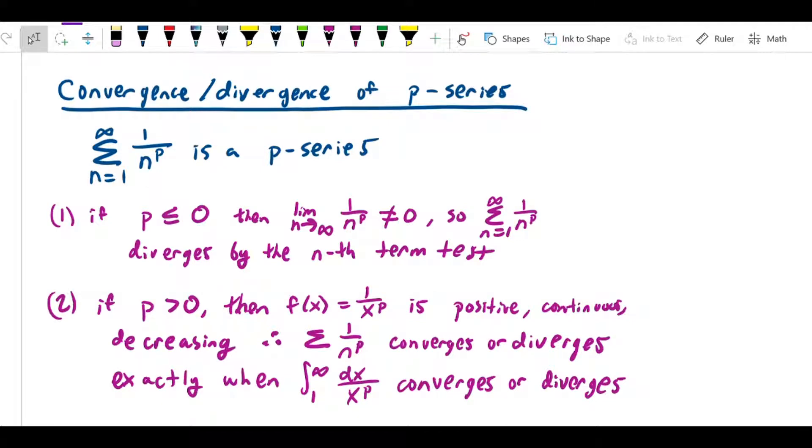Back in the section on improper integrals, we learned about a type of integral called a p-integral. There's a very close analogy to series. If we have the sum from n equals 1 to infinity of 1 over n to the p, we call that type of series a p-series. Recall that the p-integral was the integral from 1 to infinity of dx over x to the p. This is really a very similar definition, and the rule is really the same.